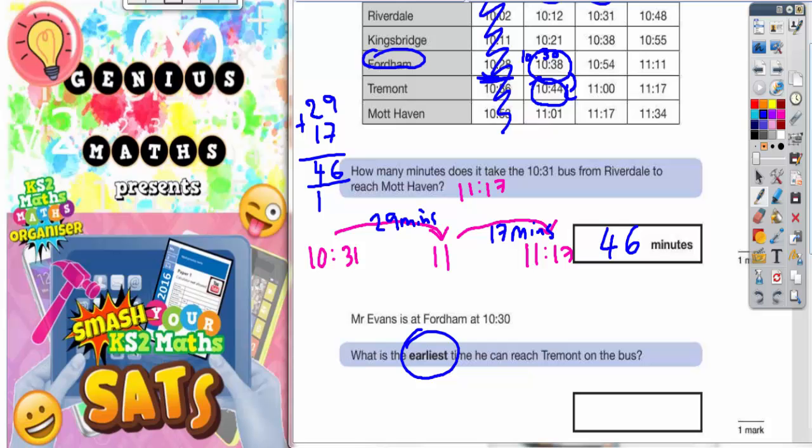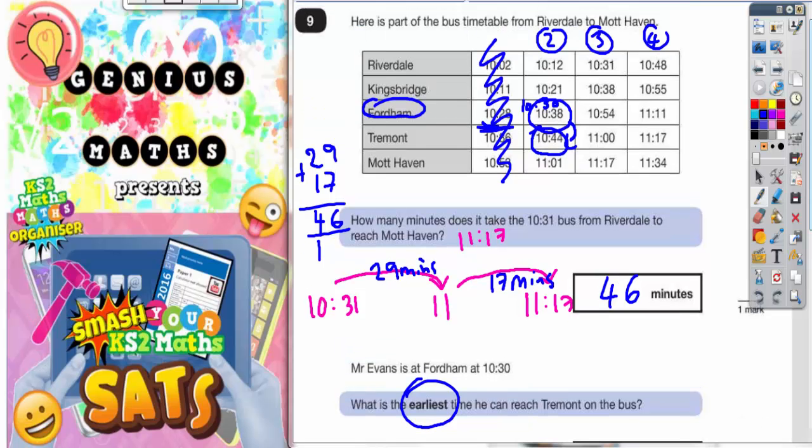And that is the time that we're looking for. 10:44. Because he can't get on bus number 1 because he's missed it because that left Fordham at 10:28. And he's not going to get on bus number 3 or 4. Because if he wants to get to Tremont as early as he can, he's going to get on the Fordham bus at 10:38, which gets to Tremont at 10:44. So there's your two answers.